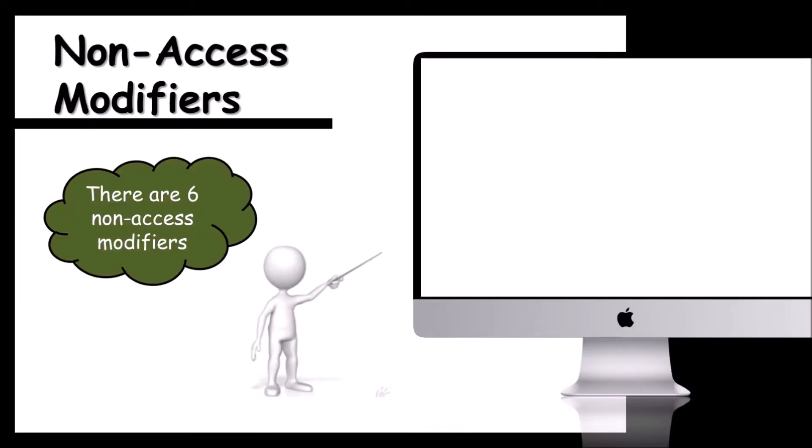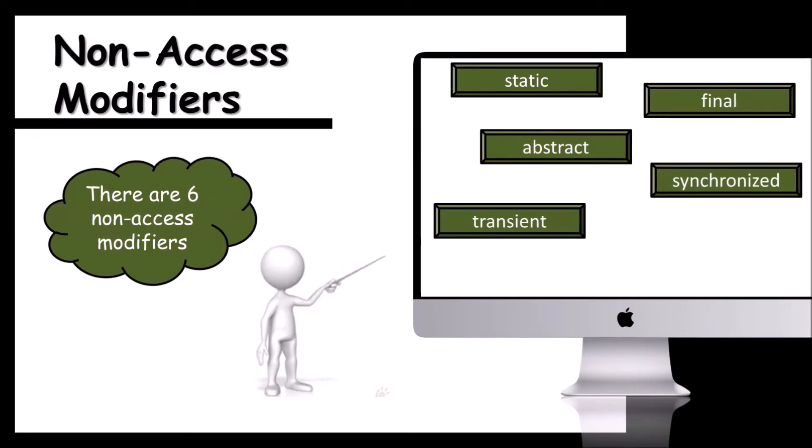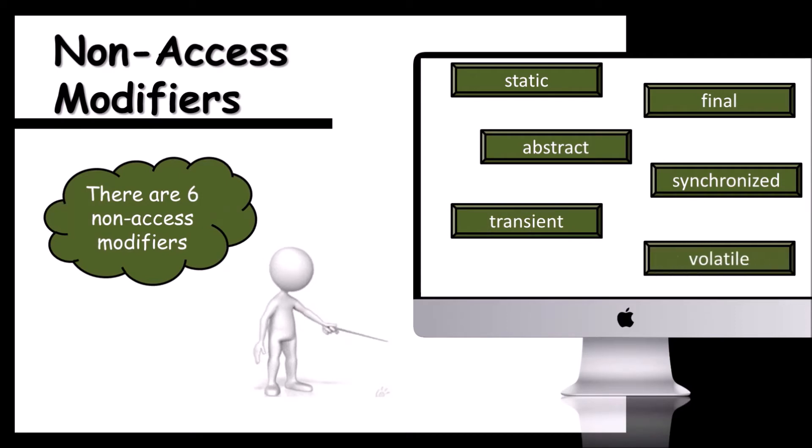So let us observe that now. Java provides six non-access modifiers. They are static, final, abstract, synchronized, transient, and volatile. Here comes static.